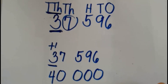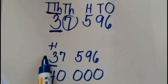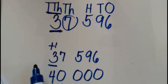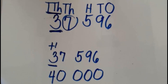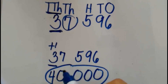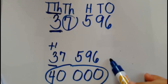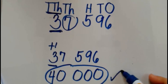The last step says that we copy the digit or digits found at the left side of the digit we are rounding. Since there is no digit at the left side of 3, we have nothing to copy. And our final answer is 40,000. So 37,596 rounded to the nearest ten thousands is 40,000.